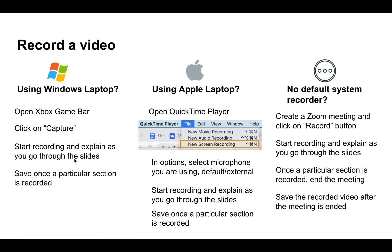You can start recording and go through the slides. Once you are done with a particular section, make sure you record it. If you are using a Mac, you can use QuickTime Player — go to File and select New Screen Recording. Again, make sure your microphone is connected and capturing audio. When done, you can save that particular file.